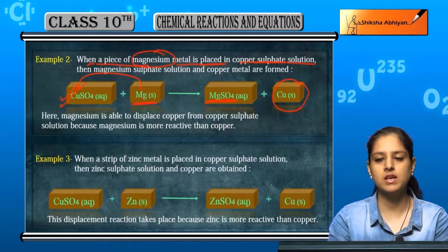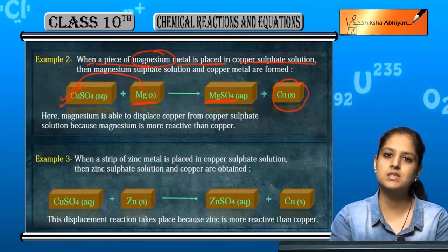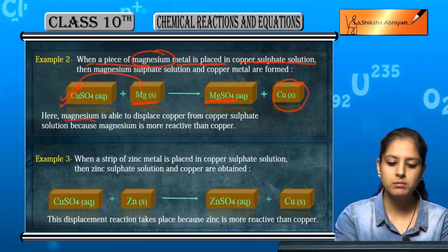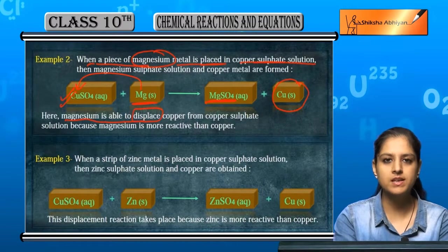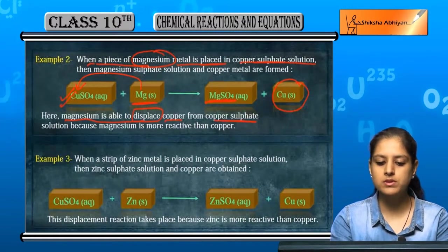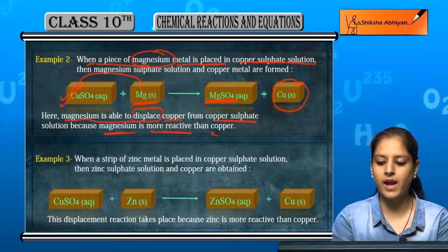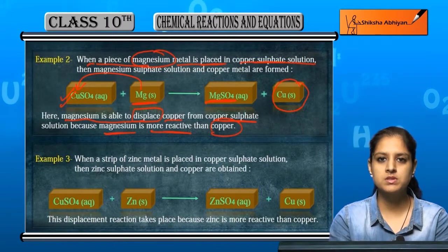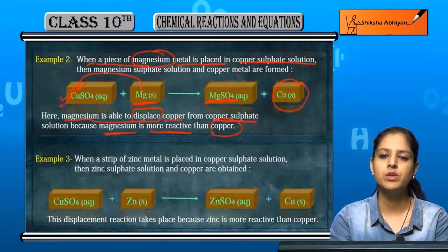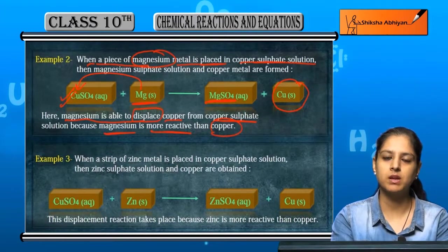Here, magnesium is able to displace copper from copper sulphate because magnesium is more reactive than copper. If it is more reactive than copper, it will displace the copper.